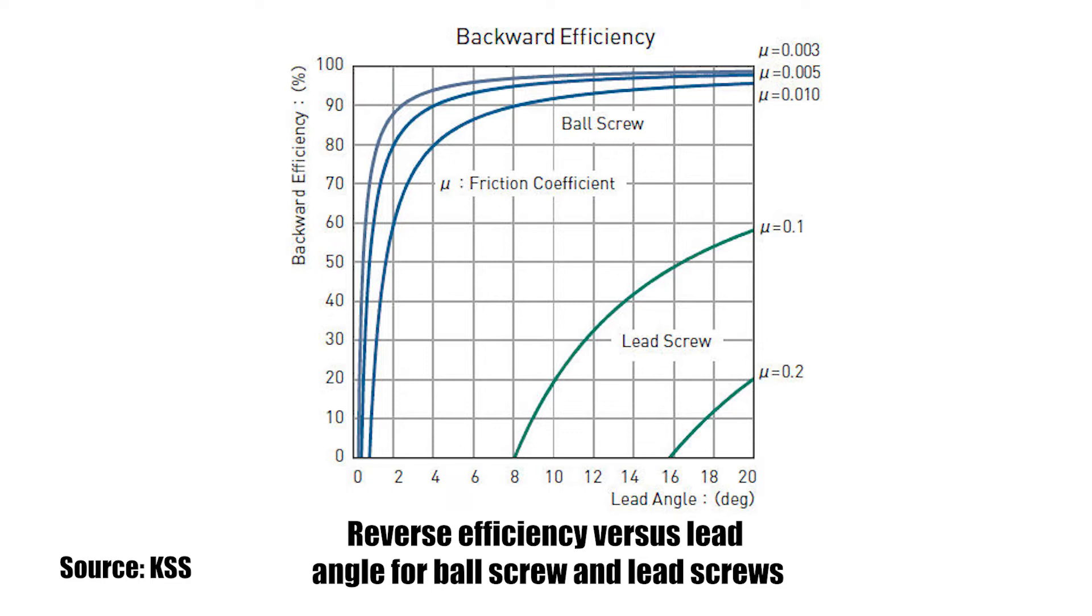Lead screws are low-efficiency drives, and they typically have a low tendency to backdrive. On the other hand, ball screws are highly efficient, making them more likely to backdrive, especially in vertical applications.